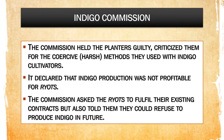The commission held the planters guilty and criticized them for the harsh methods they used with the indigo cultivators. It declared that indigo production was not profitable for the ryots, as planters bought the indigo crop at very low prices and the cycle of loans never ended. The commission asked the ryots to fulfill their existing contracts but also told them they could refuse to produce indigo in future — the planters could not pressurize them.